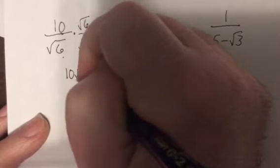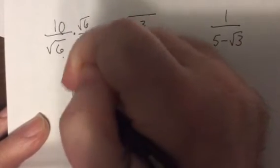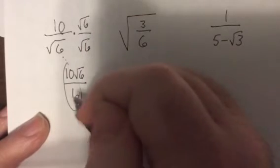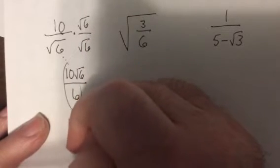Okay, so this one. You can't have a radical in the bottom, so I'm going to simplify. Multiply the top and bottom by square root of 6. So, it'll be 10 square root of 6 over the square root of 36, which is 6. Then there's no plus or minus, so I can reduce this by 2.